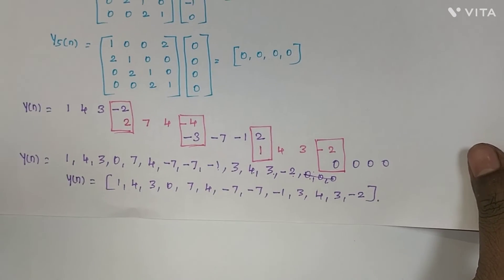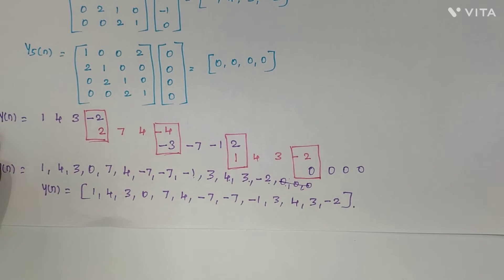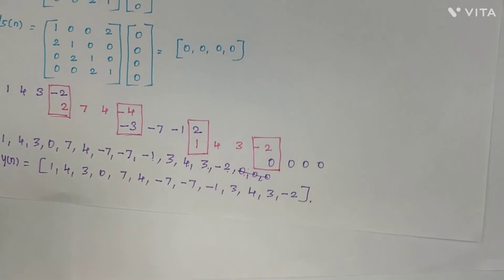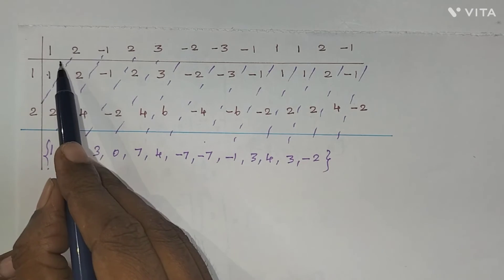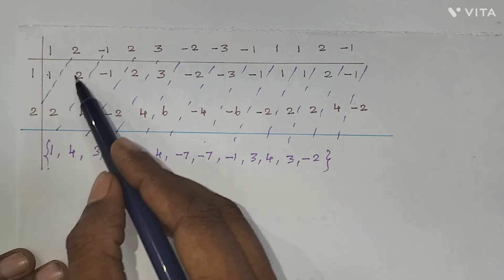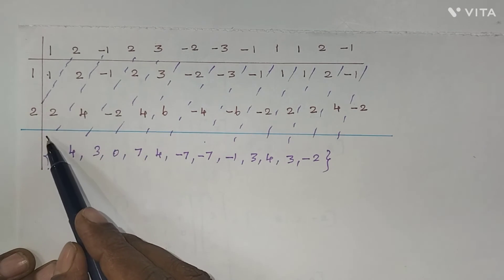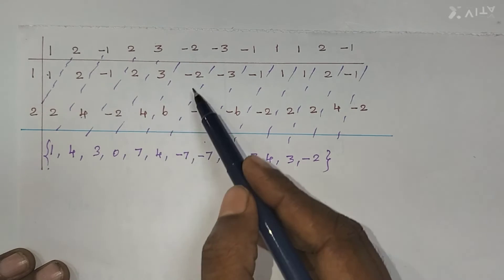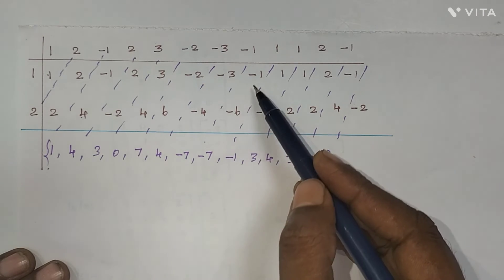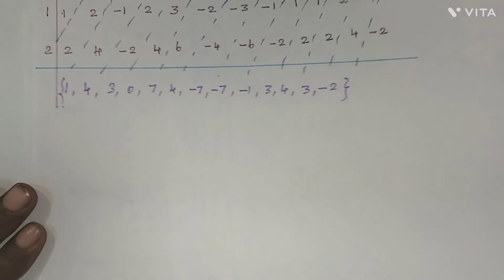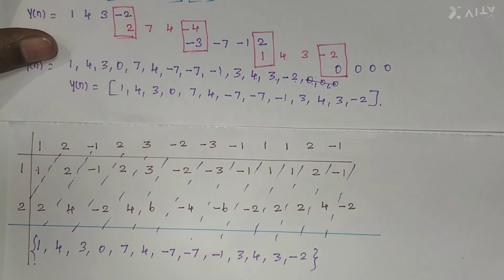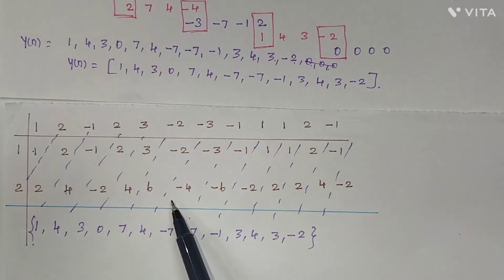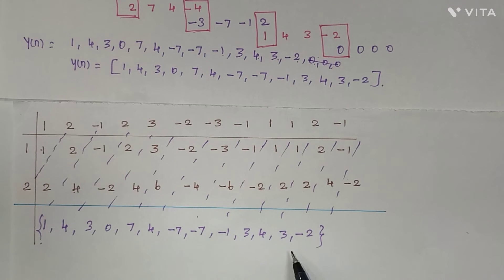We verify this result using the simple cross-multiplication method, multiplying the impulse response and the input sequence and adding diagonally. The diagonal sums give: 1, 4, 3, 0, 7, 4, minus 7, minus 7, minus 1, 3, 4, 3, minus 2 — which matches the overlap-add output, confirming the result.